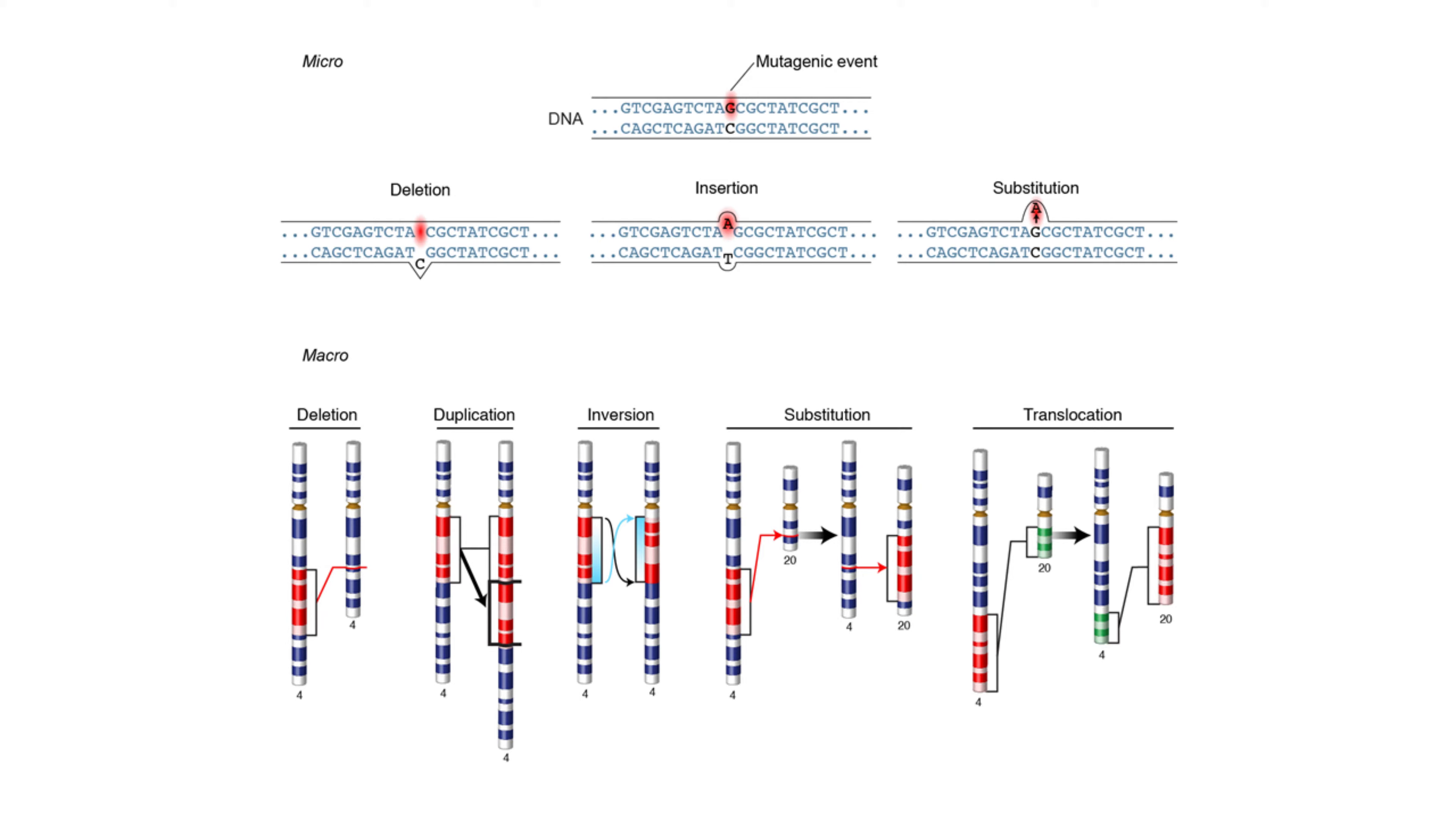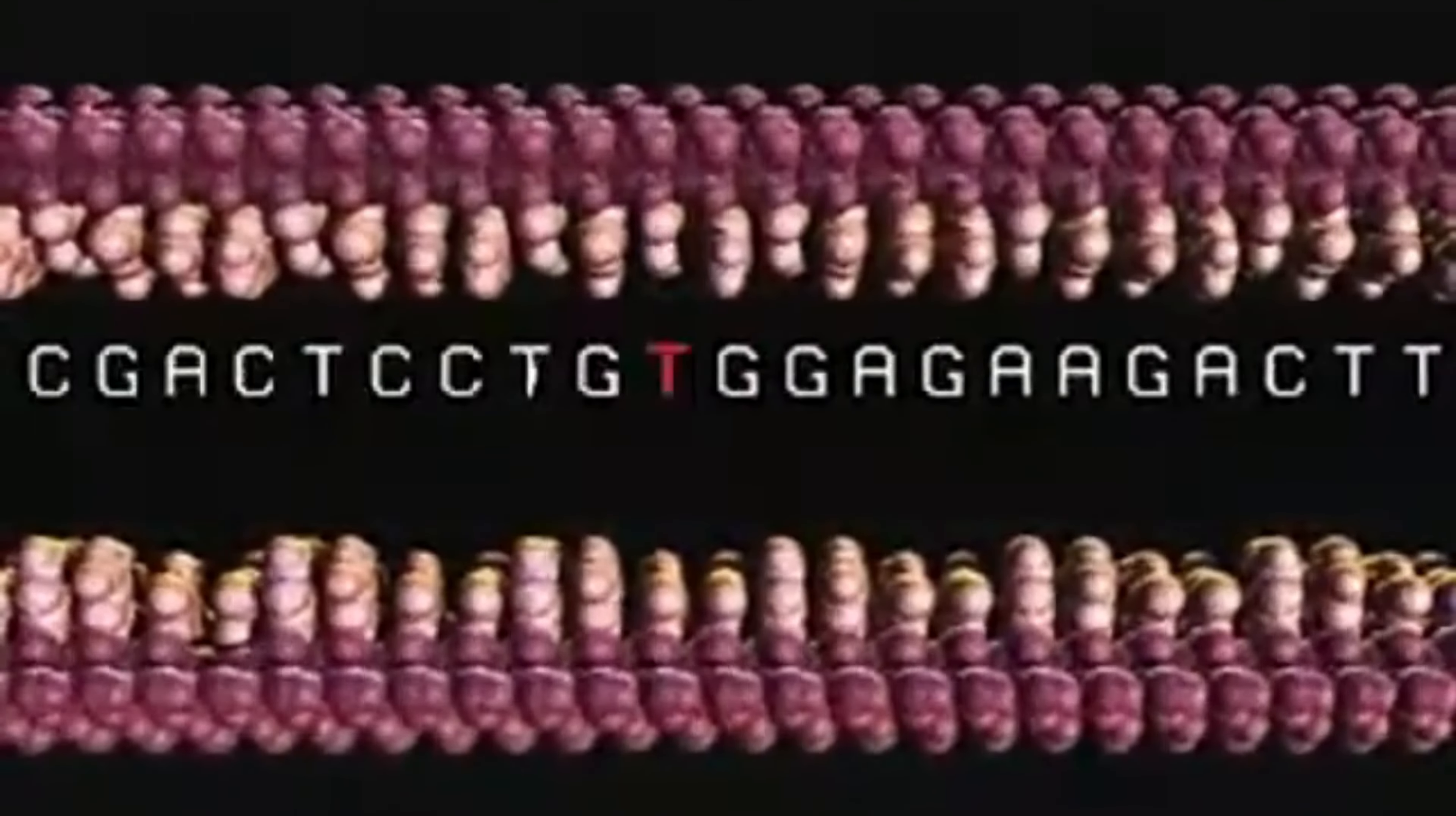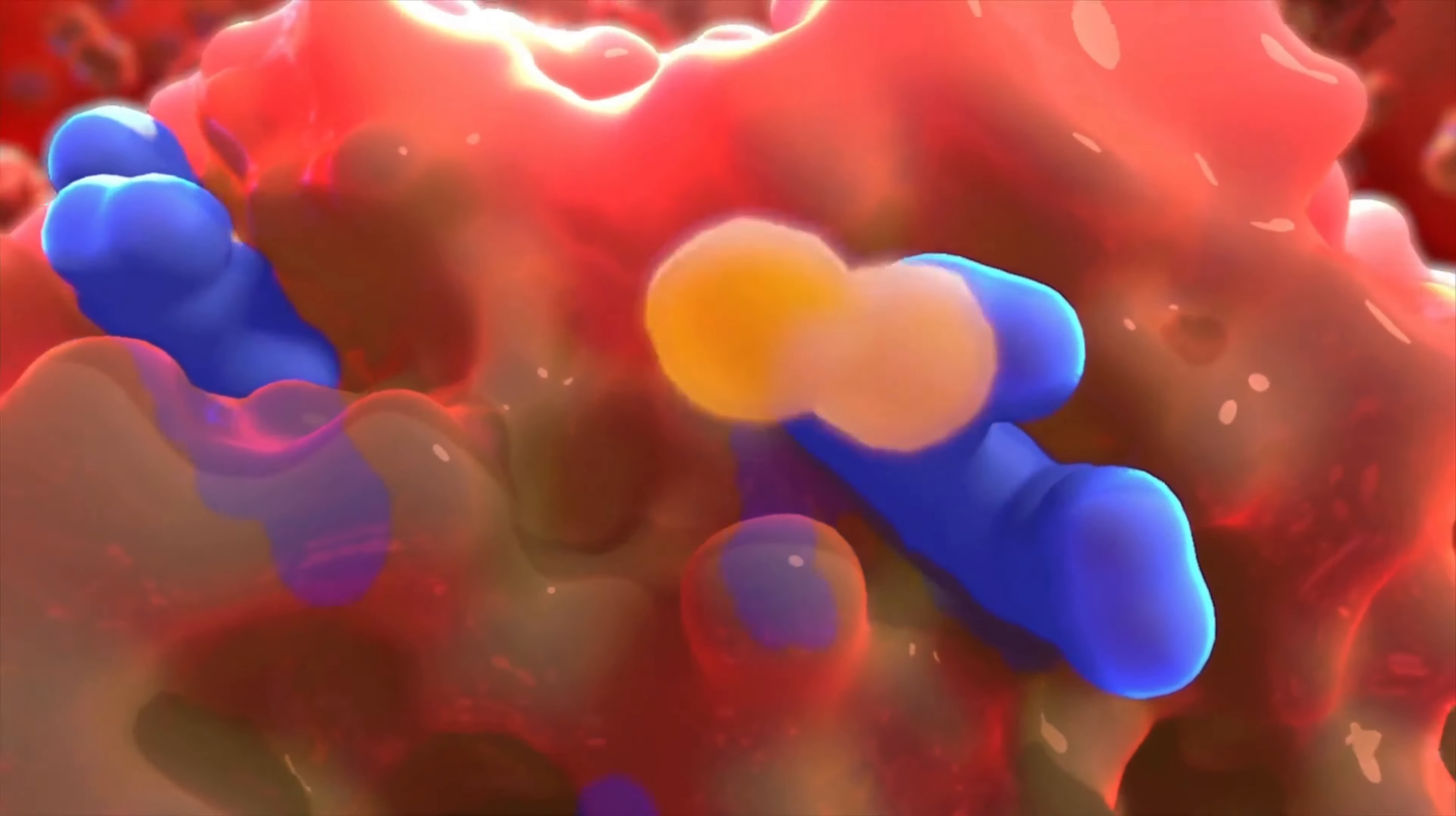Sickle cell anemia is a disease caused by a change in a single nucleotide, and it represents just one class of mutations called point mutations. The alteration of a single nucleotide in the gene for the beta chain of the hemoglobin protein, the oxygen-carrying protein that makes blood red, is all it takes to turn a normal hemoglobin gene into a sickle cell hemoglobin gene.